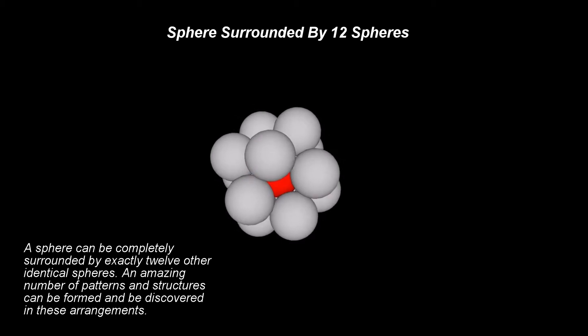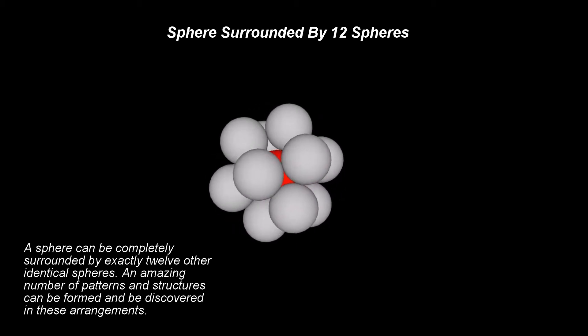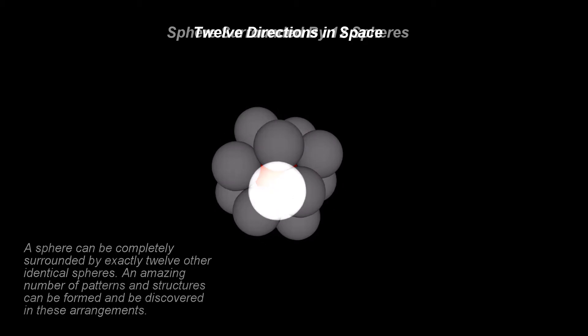Let's start by stating a well-known fact: a sphere can be completely surrounded by exactly 12 other identical spheres, in only one way.